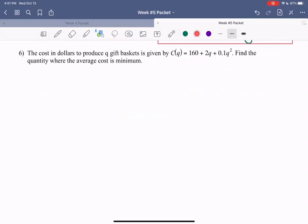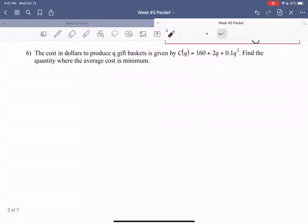So for this problem, we're told that the cost in dollars to produce Q gift baskets is given by the function C of Q. What we want to do is find the quantity where the average cost is minimized. So similar to the previous problems, our first goal is to find that average cost function. And here we want to find the quantity that minimizes this average cost. So we want our average cost to be a function of Q, the quantity.